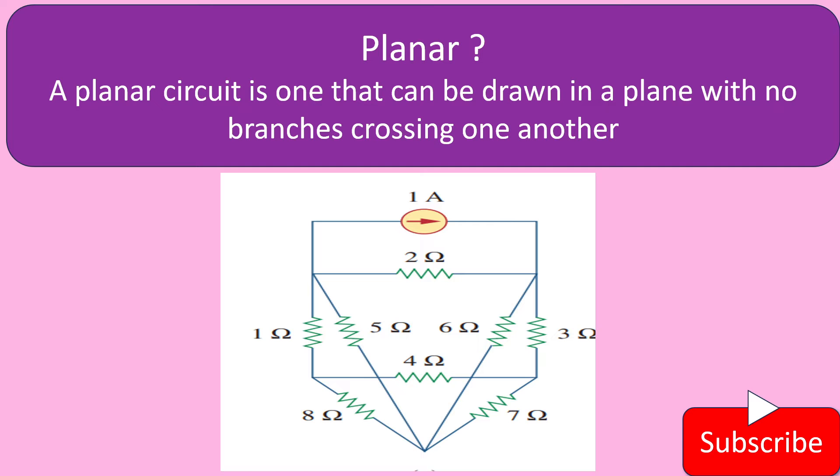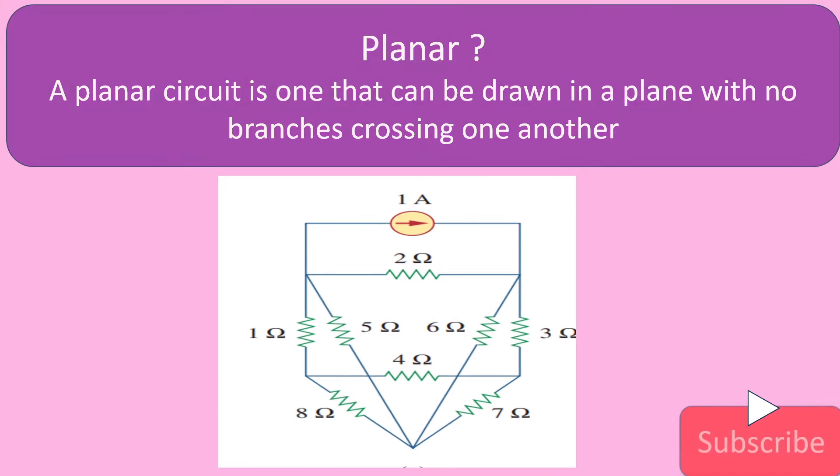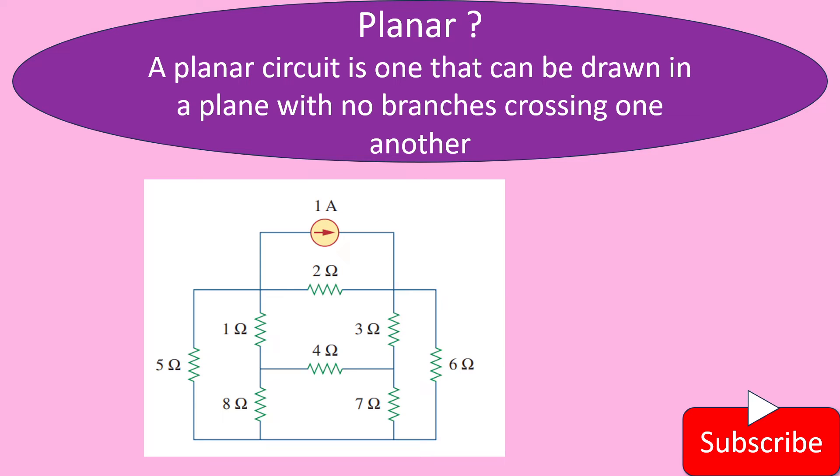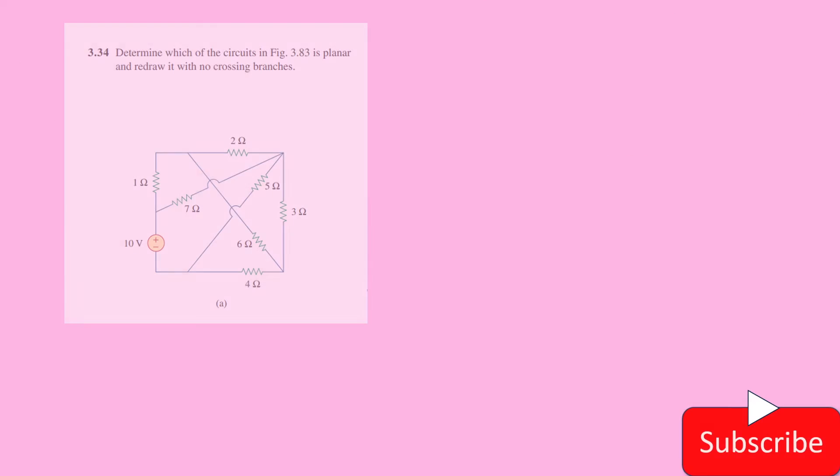But if we redraw this circuit, it becomes planar because this circuit doesn't have any crossing branches. So in our problem we are asked to find out whether it is planar. If planar, we need to redraw the circuit without crossing branches.